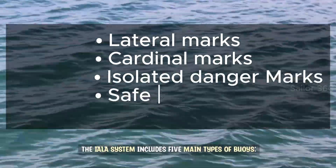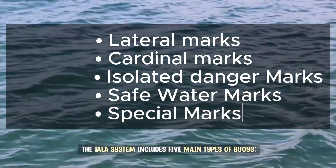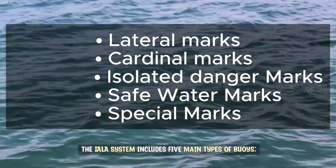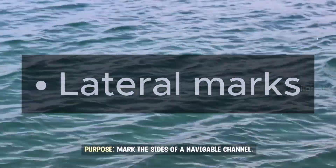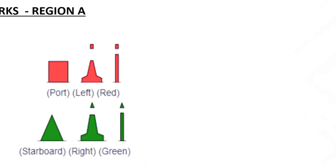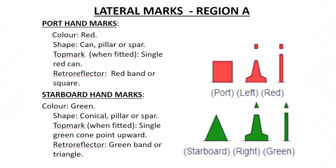The IALA system includes five main types of buoys. First, lateral marks. Purpose: mark the sides of a navigable channel. Features for Region A — port: red, cylindrical shape, red light if lit, top mark single red can.